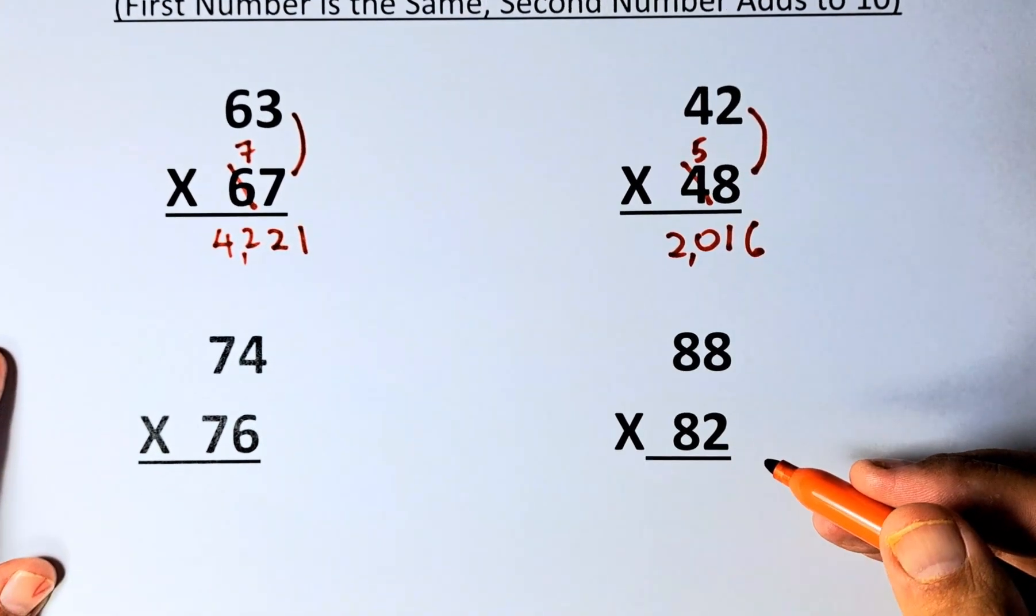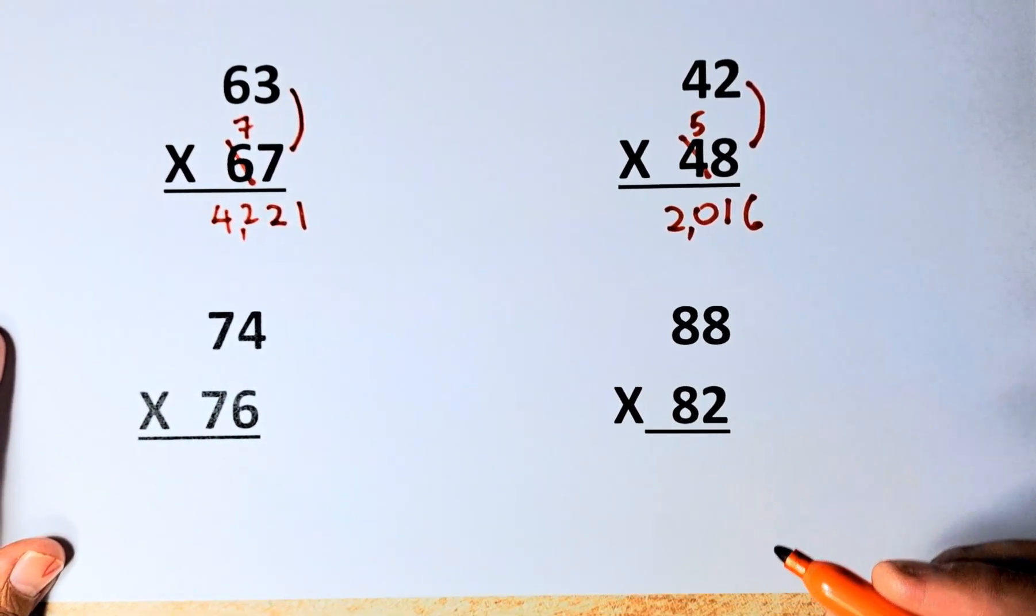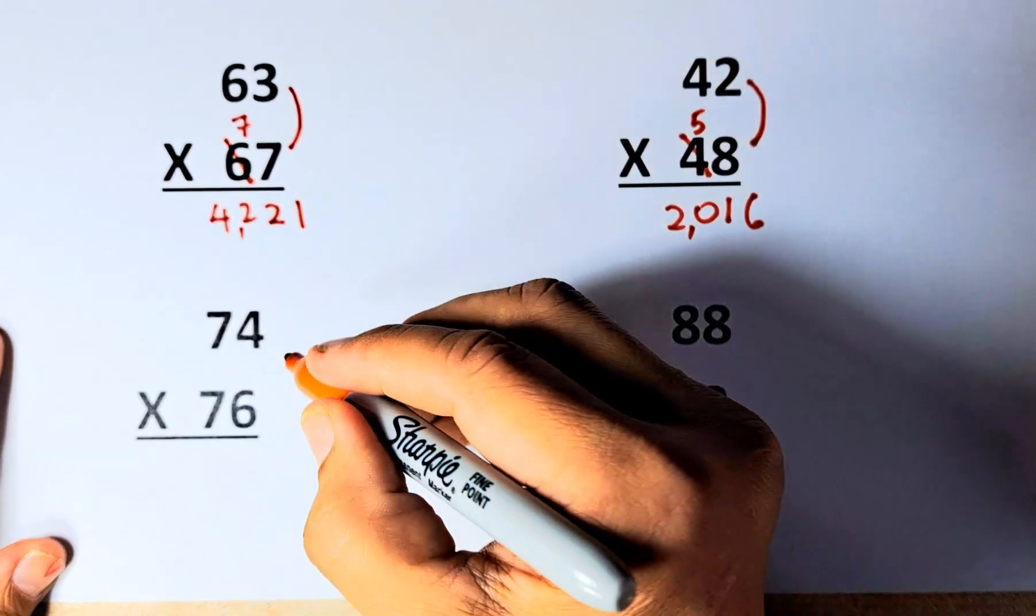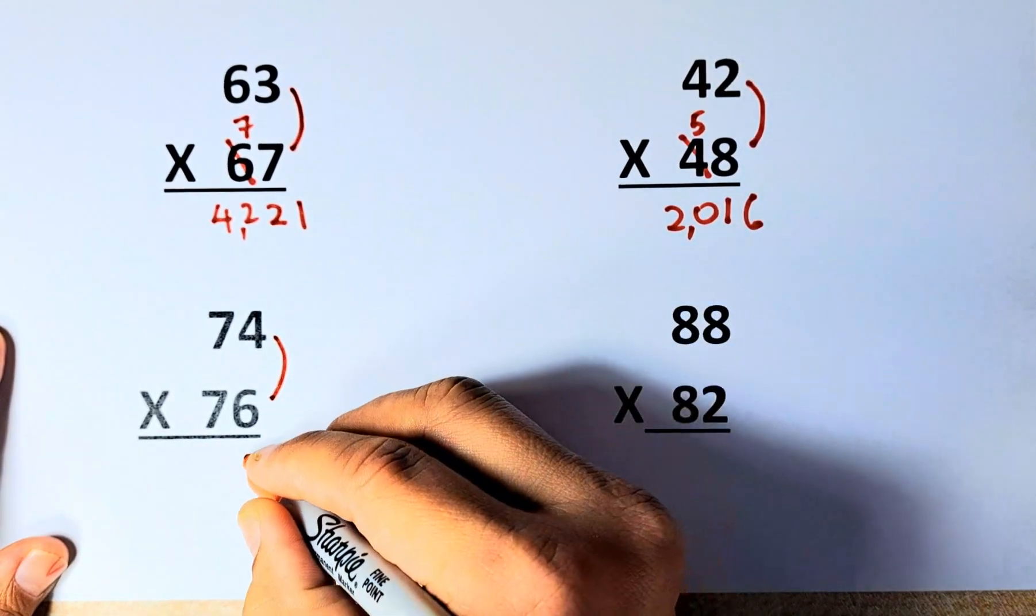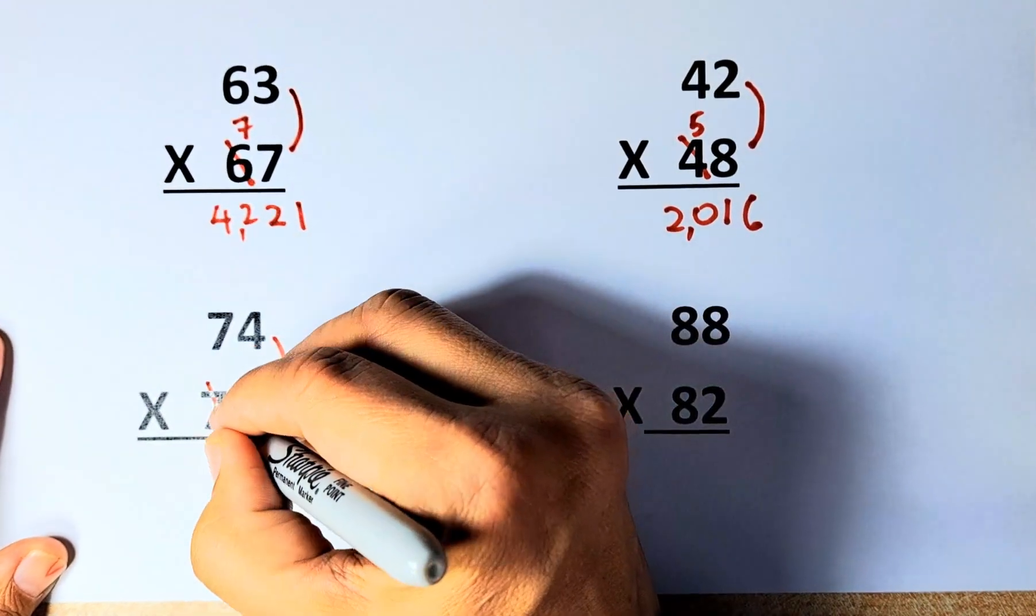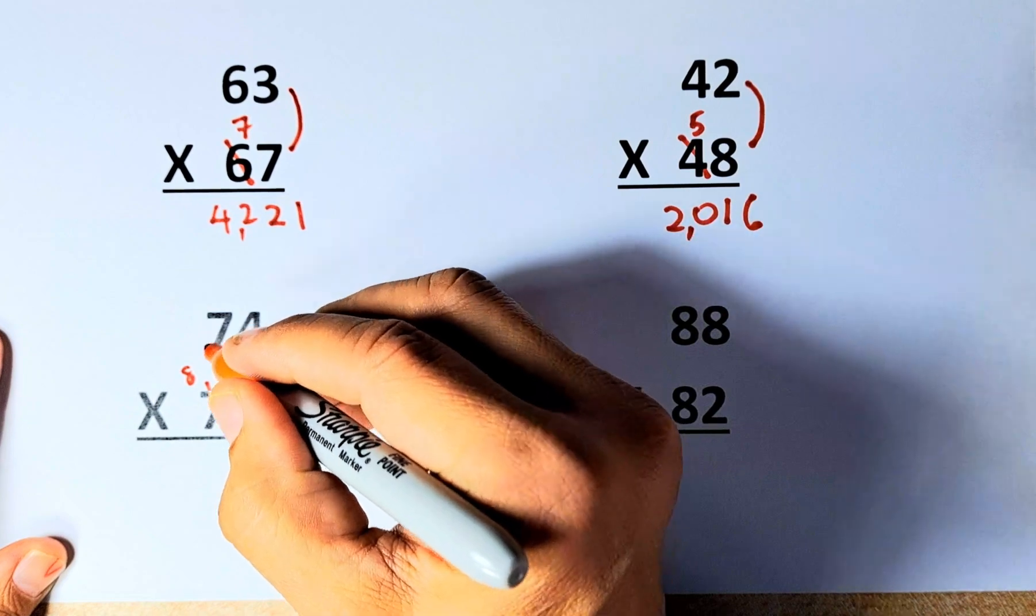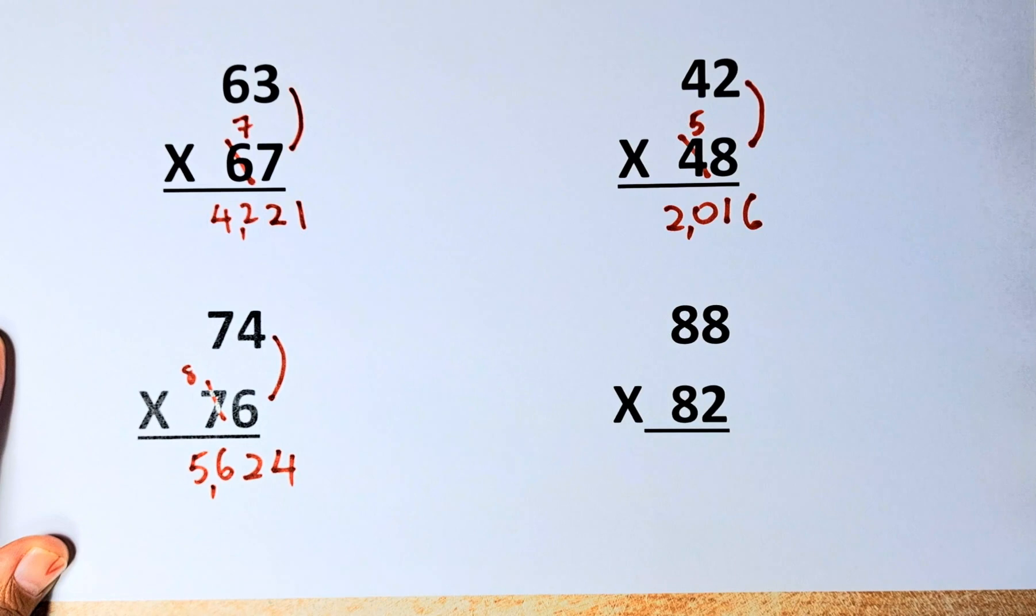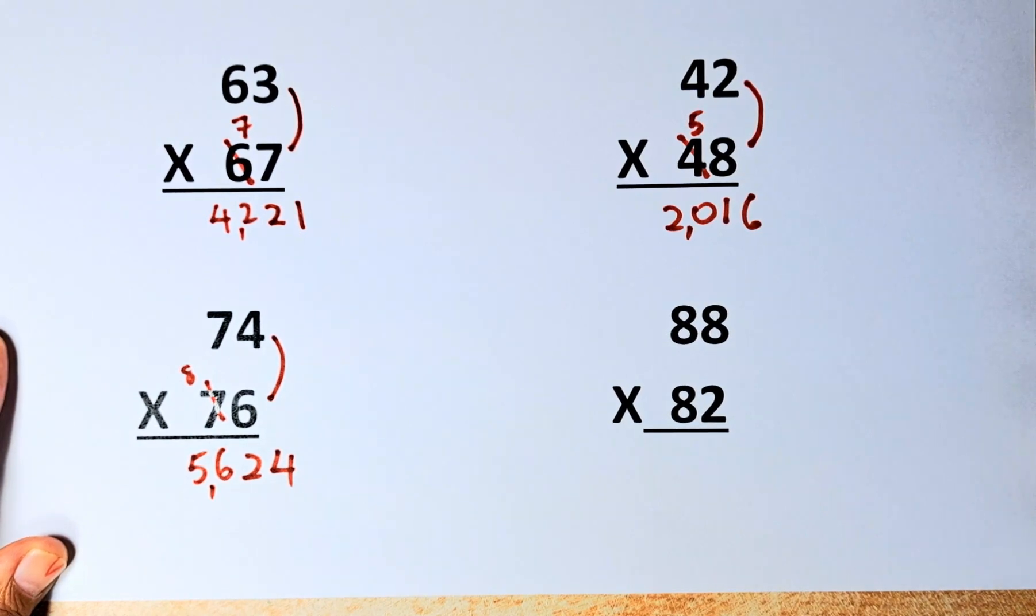Next example, 74 x 76. And by now, you should know how to do them. So what we do, 4 x 6 is 24, we write 24 and then 7 increase by 1 becomes 8. 7 x 8 is 56. So the answer is going to be 74 x 76 is 5,624.